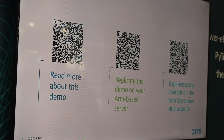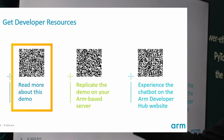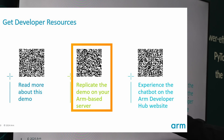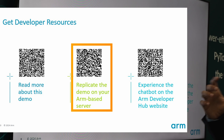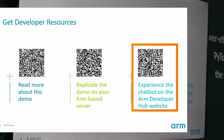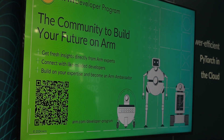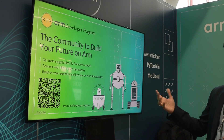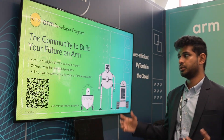Here are some developer resources. Scan this QR code to read more about this demo. To replicate this demo on your own ARM-based server, scan this QR code and follow the learning path. If you want to experience a similar chatbot on learn.arm.com, scan this QR code and try some chatbot exercises. To join the ARM developer program, scan this QR code and join the community to build the future on ARM.